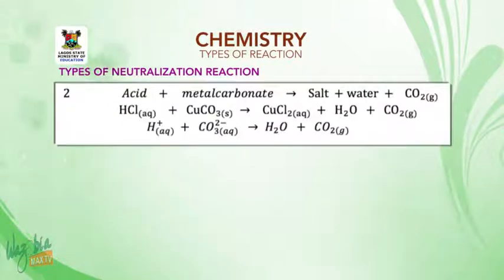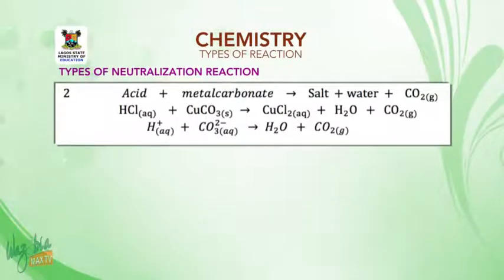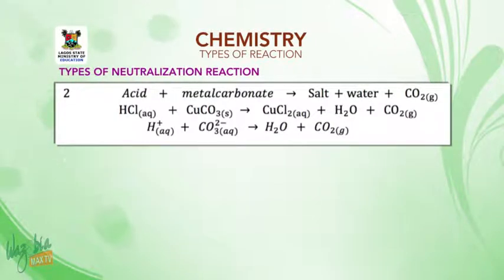Number two: acid and metal carbonate give salt, water, and carbon dioxide. For example, hydrochloric acid plus copper(II) carbonate gives copper(II) chloride, water, and carbon dioxide.